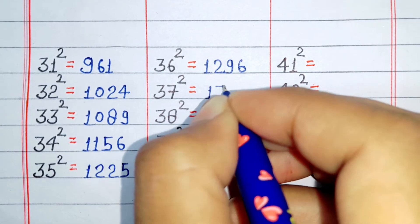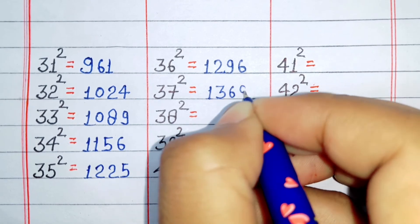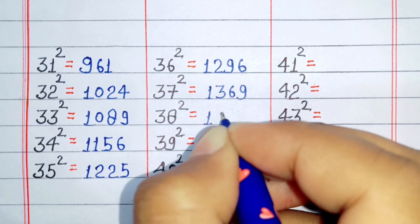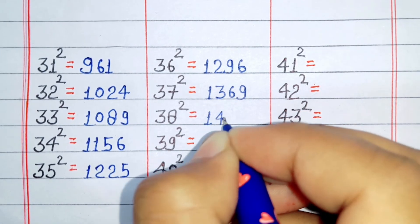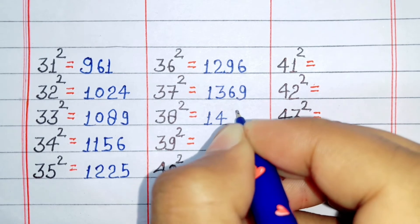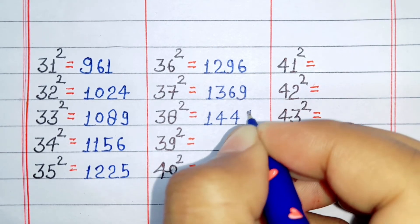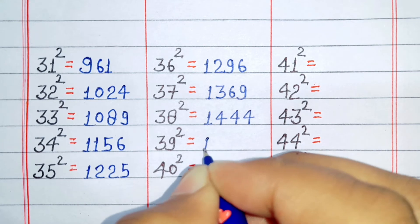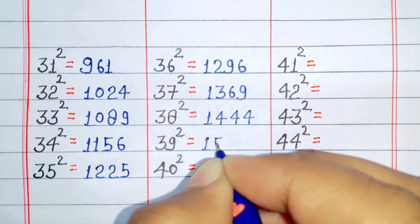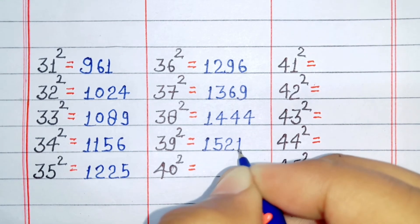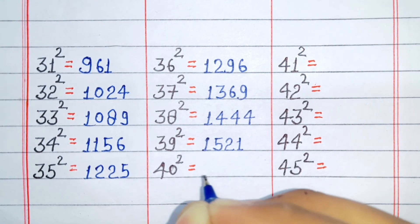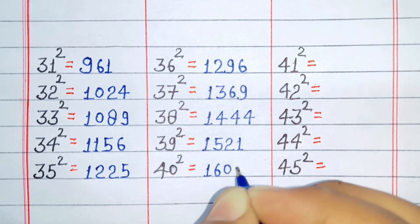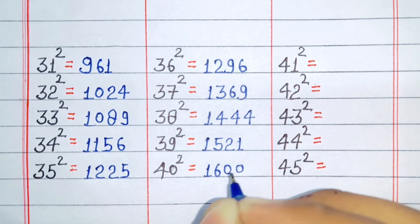Square of 37 is 1369. Square of 38 is 1444. Square of 39 is 1521. Square of 40 is 1600.